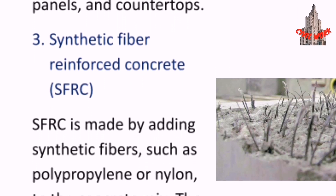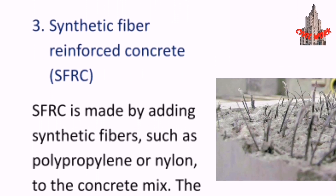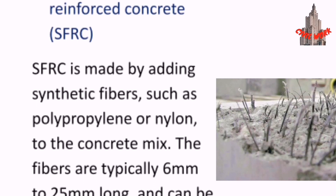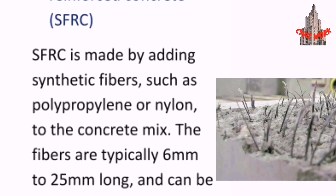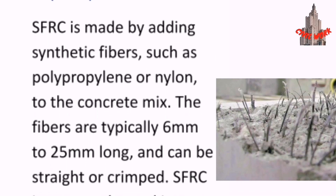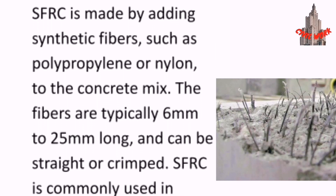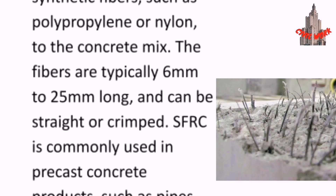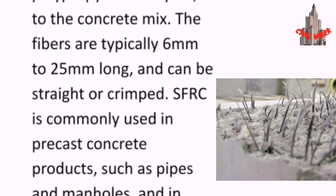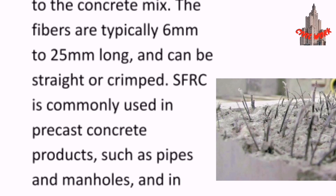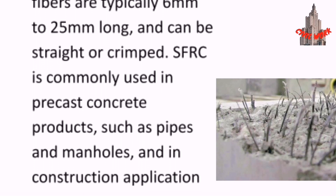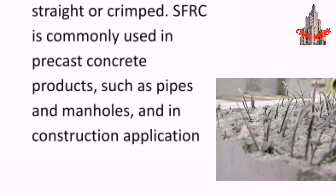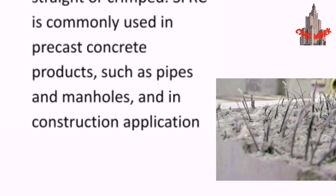Synthetic fiber-reinforced concrete is made by adding synthetic fibers such as polypropylene or nylon to the concrete mix. The fibers are typically 6 mm to 25 mm long and can be straight or crimped. Synthetic fiber-reinforced concrete is commonly used in precast concrete products such as pipes and manholes, and in construction applications where high impact resistance is required.